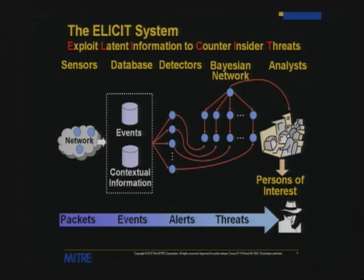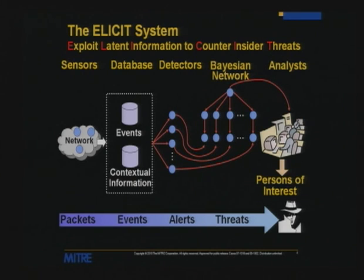We built a network sensor that looks at how people use information. We also collected context about people and the information they interact with. Combining those two forms of data, we built a number of detectors that calculate a score each day for every active user and produce alerts when reporting thresholds are exceeded. Even with alerts, if you're monitoring a large enterprise you still have too many to look through — similar to looking at Snort output for a large network.